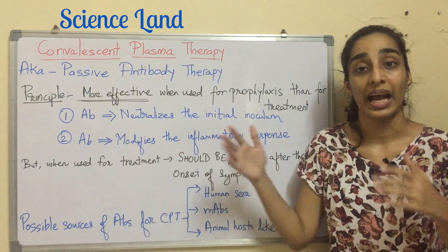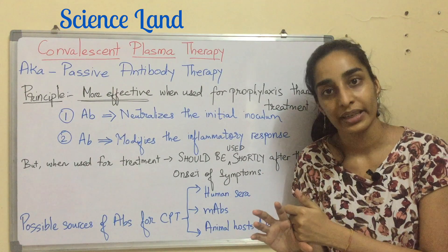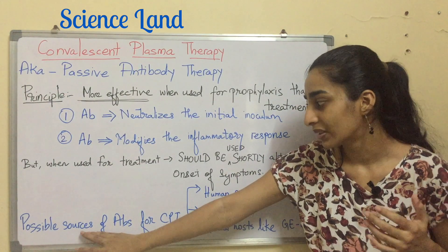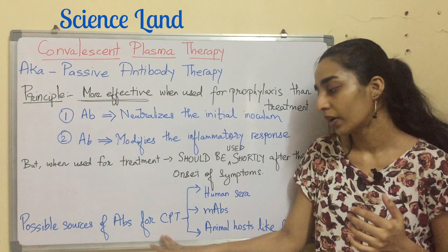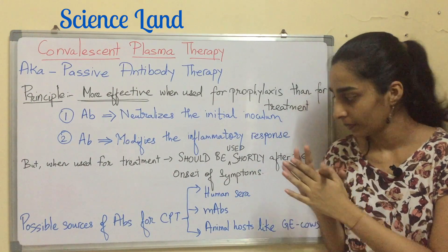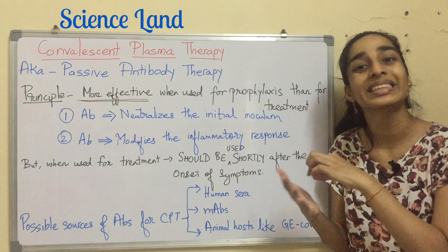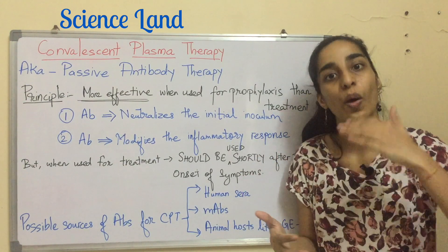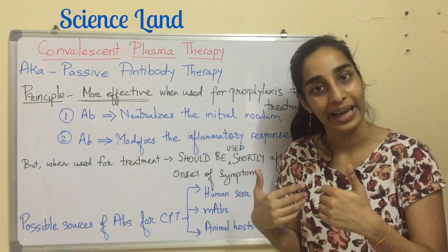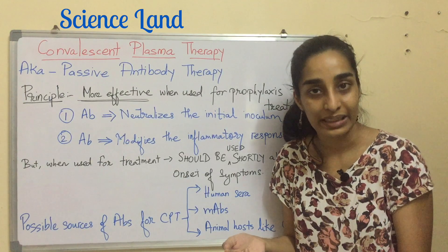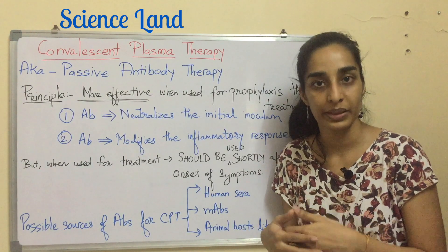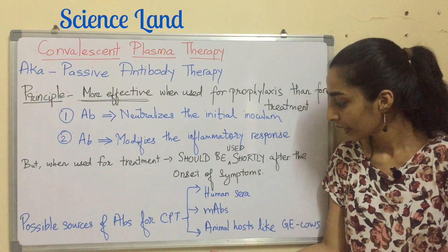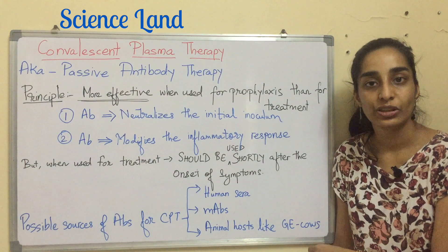What are the possible sources of antibodies for convalescent plasma therapy? There are three main sources. The first is human serum or plasma that contains antibodies — this serum comes from patients who have already recovered. If someone has never been infected by a particular disease, taking their serum will not help because the antibodies won't be there. The second source is MAbs — monoclonal antibodies. The third is animal hosts, such as genetically engineered cows that produce human antibodies.